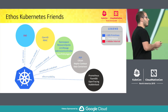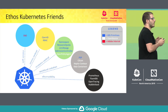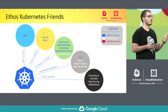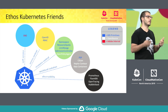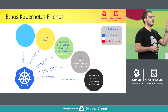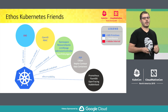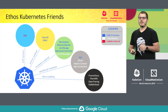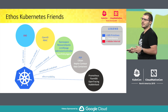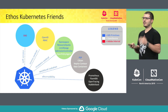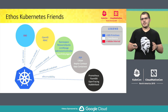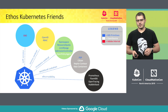Ethos Kubernetes combines Kubernetes primitives and software developed internally at Adobe in order to provide five main requirements of a multi-tenant platform: self-service, access control, resource control, workload isolation, and observability. Kubernetes primitives are not enough to achieve all of these requirements.